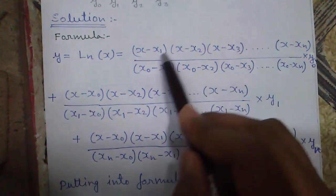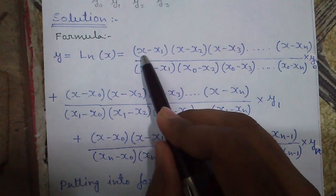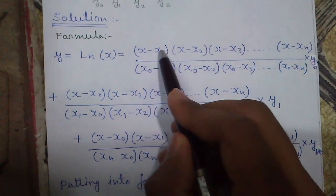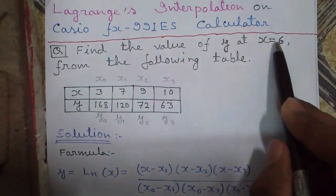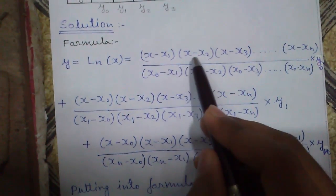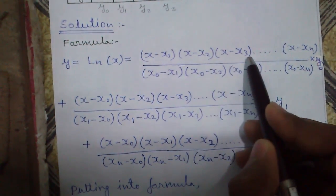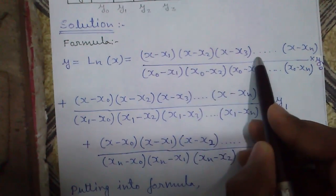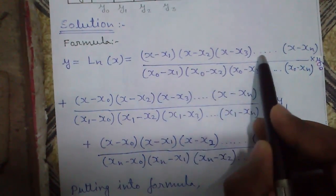Remember in the first term we will be working with x0 and y0. It equals x minus x1, x is given in the question, times x minus x2, x minus x3, similarly in increasing order.